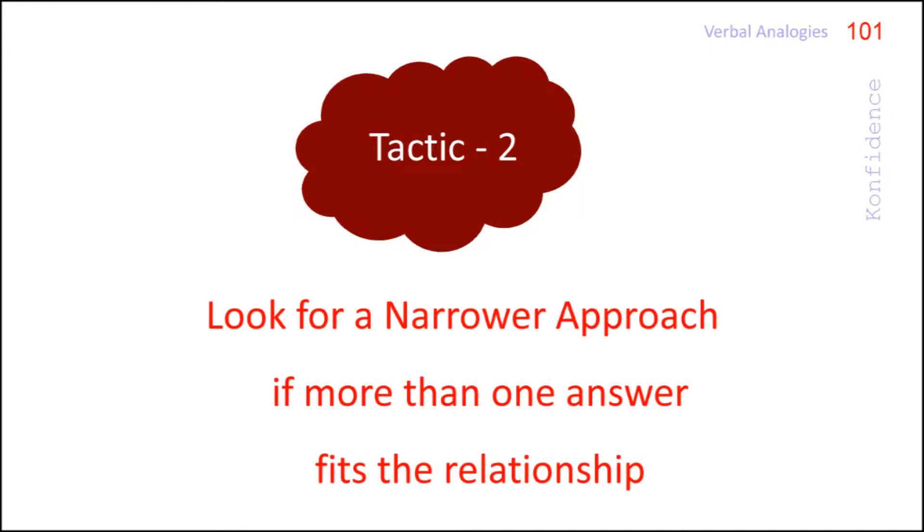So we need a second reading of the original pair. The second reading is to find out a different relationship between the words. This is what is called narrower approach. Let us see how we can do it.